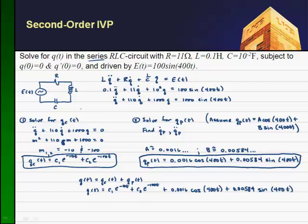So I get Q of T is equal to C1e to the minus 10T plus C2e to the minus 100T plus 0.0016 cosine of 400T plus 0.00584 times the sine of 400T. So this is now our sort of governing system, if you will. But it's a two-parameter family of curves in that we haven't specified C1 and C2 yet. So we haven't applied Q of 0 is equal to 0 or Q dot of 0 is equal to 0. So at this point you could apply the first condition or you could just find the derivative.